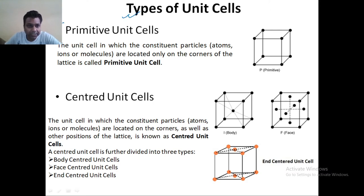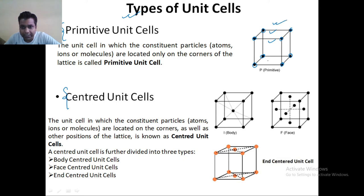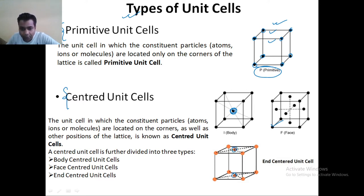We are having two types of unit cell. One kind of unit cell is that in which you have the constituent particles present at the corners only — if you have this type of unit cell, then it is known as your primitive unit cell. And if the constituent particles are present at the corners as well as in the center — like in the center of the body, on every face, or on the end faces only — these are known as your centered unit cell.